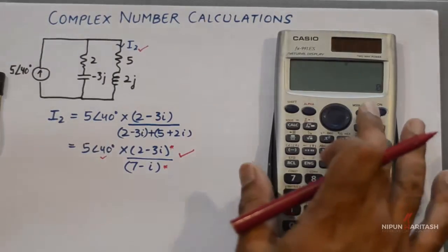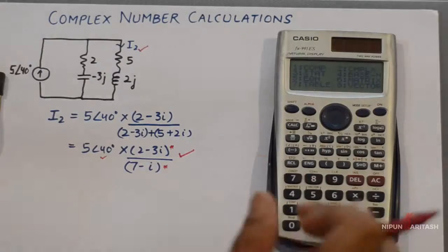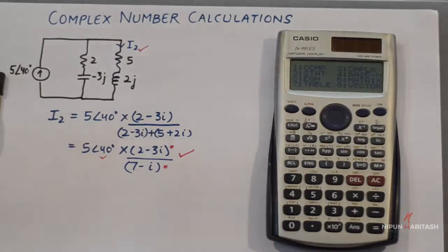You can go to mode, then select 2. In this mode, you can perform calculations on complex numbers represented in both polar and rectangular form directly.